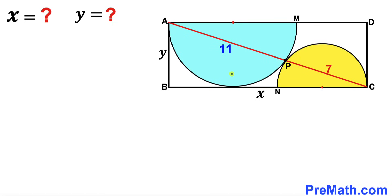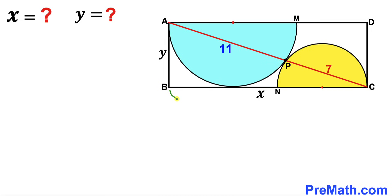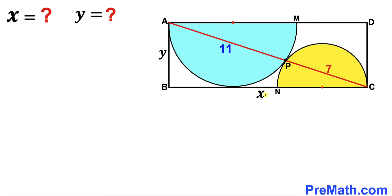Welcome to PreMath. In this video we have two semicircles fully inscribed in a rectangle ABCD. The diagonal AC passes through a point of tangency P such that AP is 11 units and PC is 7 units. The dimensions of the rectangle are represented by x and y respectively, and our task is to solve for x and y.